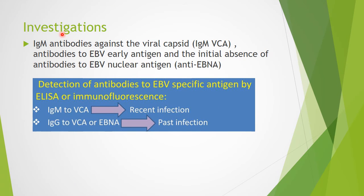Other investigations include IgM antibodies against the viral capsid antigen (IgM-VCA), antibodies to EBV early antigen, and the initial absence of antibodies to EBV nuclear antigen (EBNA). Detection of antibodies to Epstein-Barr virus-specific antigens by ELISA or immunofluorescence can be done. IgM to VCA indicates recent infection, while IgG to VCA or anti-EBNA indicates past infection.